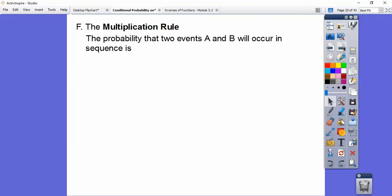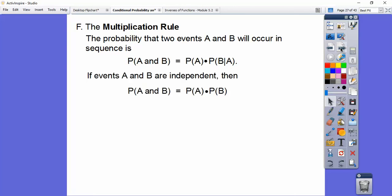The multiplication rule. The probability that two events A and B will occur in sequence is the probability of A and B equals, you just multiply the two results. Don't let this confuse you. Find the probability of A, find the probability of B given A, and then multiply those two guys out. And if they're independent, it's the same thing. You just multiply each probability. Find the probability of each one, and then multiply.